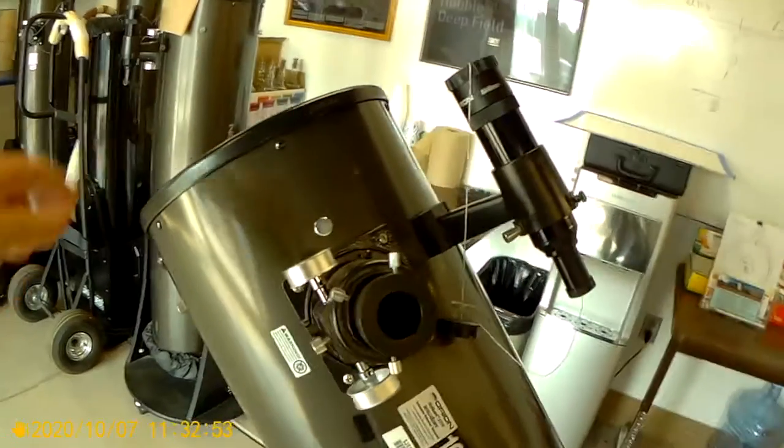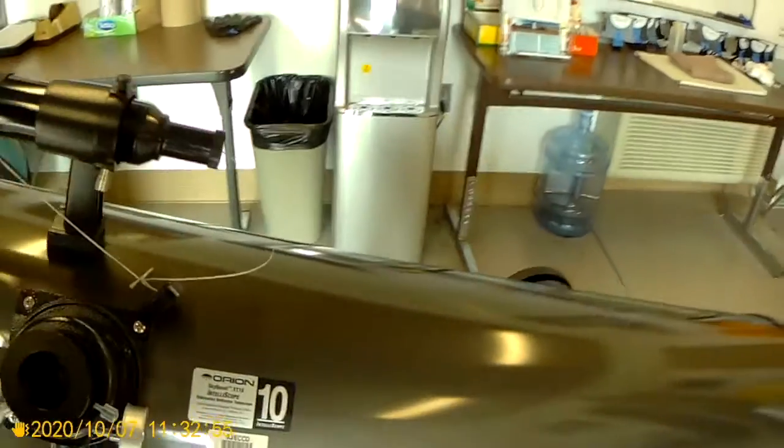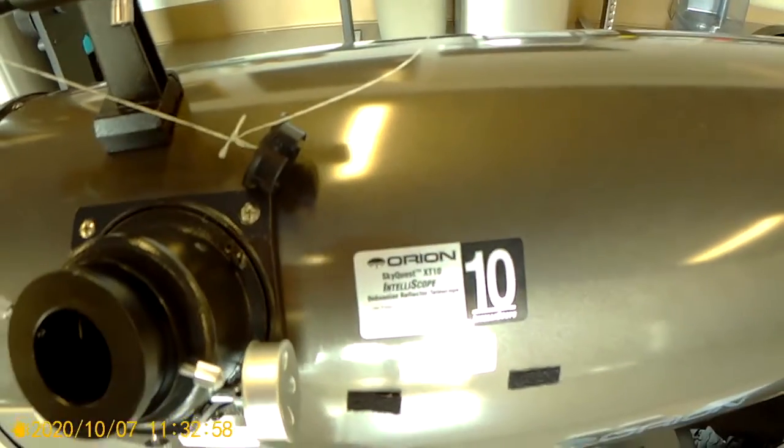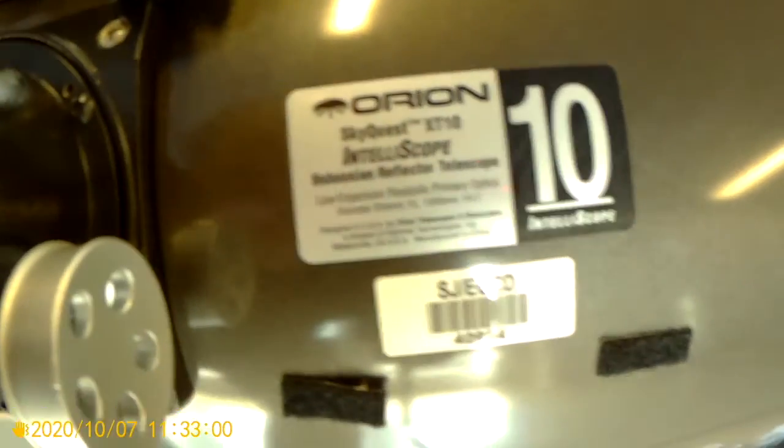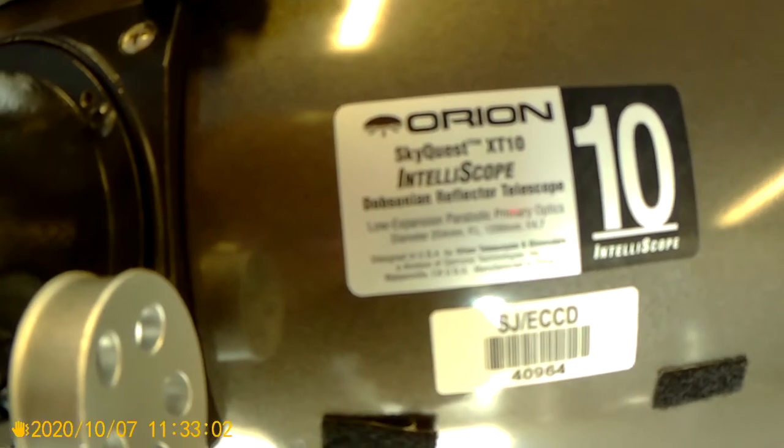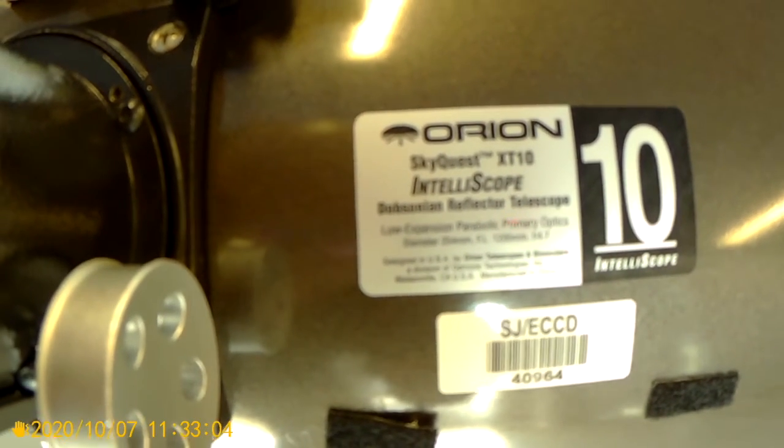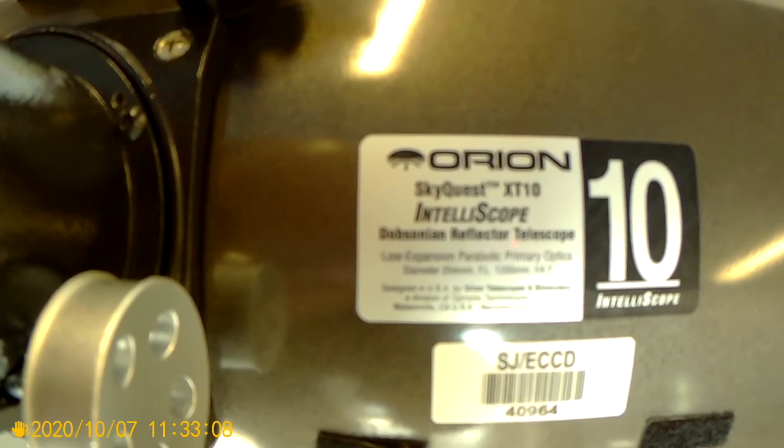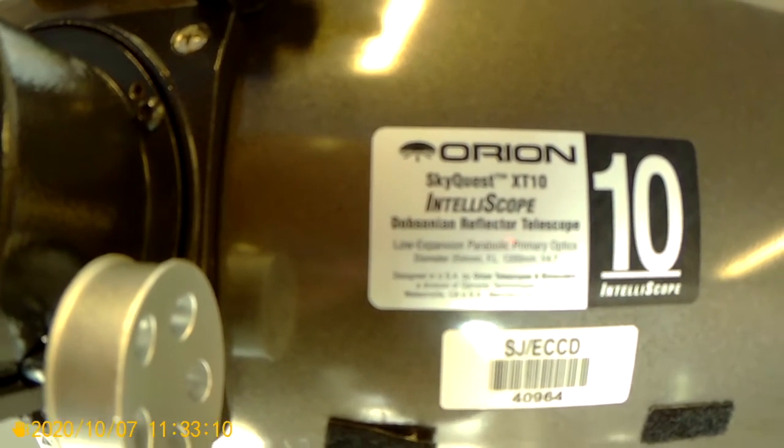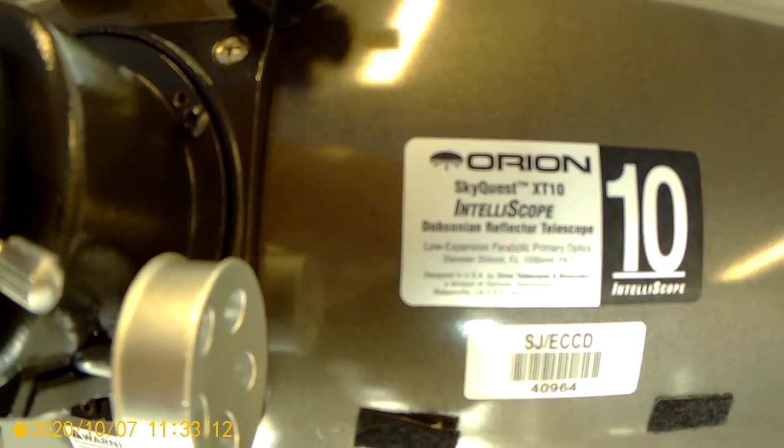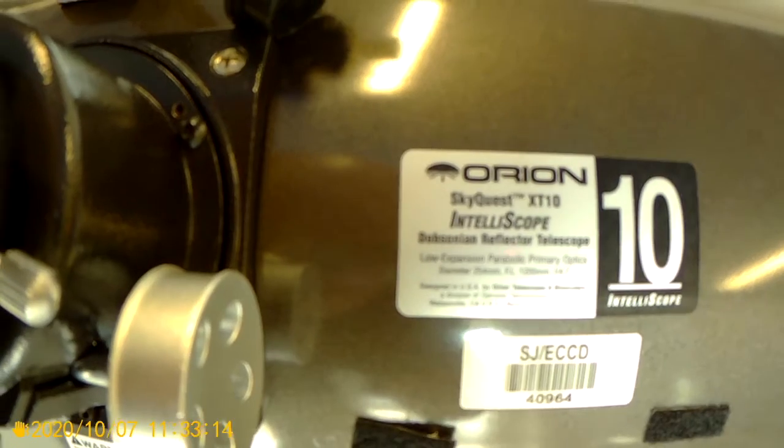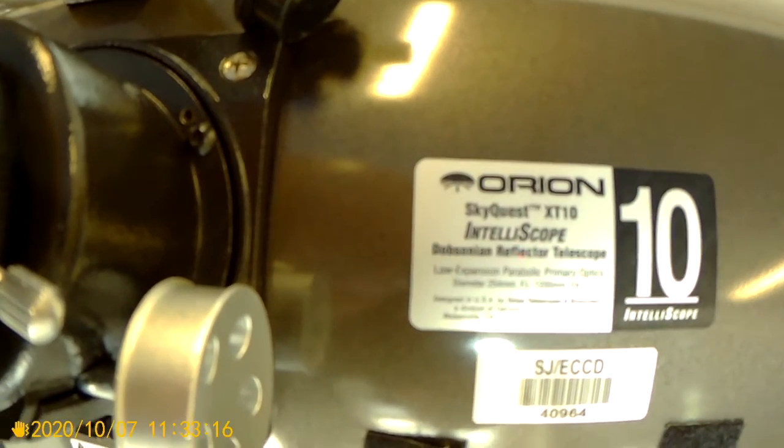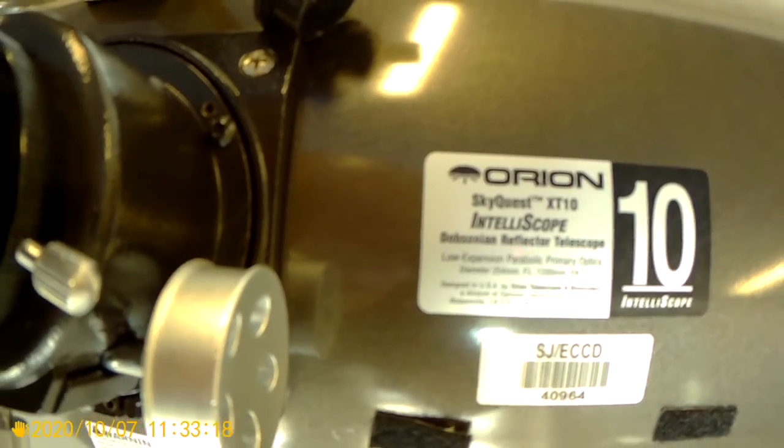So this telescope, its numbers are, it has a diameter of 254 millimeters. And it has a focal length of 1,200 millimeters. And a F 4.7 ratio.